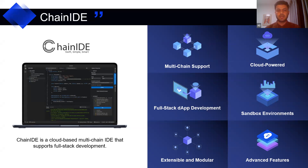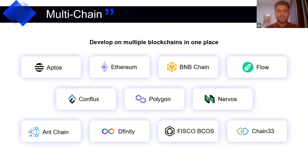Chain IDE supports plugins like the Smart Contract Verifier and Flattener — you can verify your smart contract within Chain IDE without leaving it, and you can create your full-stack DApp.